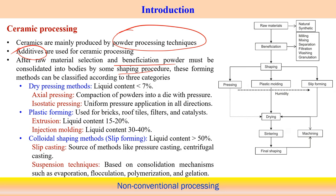Forming methods for ceramics can be classified into three categories based on liquid content. Dry processing method means liquid content is less than 7 percent. Plastic forming means liquid content is around 15 to 20 percent. Colloidal shaping methods, also called slip forming, have liquid content greater than 50 percent. So depending upon the liquid content in the ceramic powders, we distinguish these three basic categories.